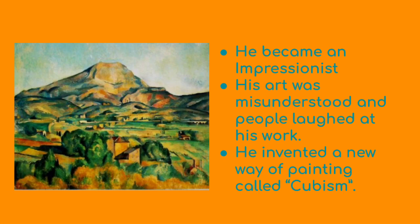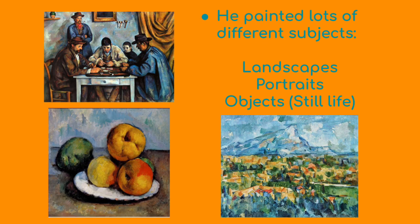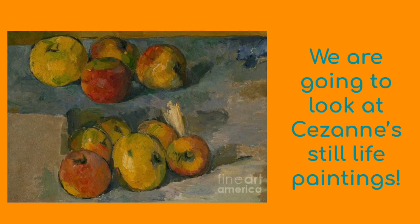Cezanne painted lots of different subjects: landscapes, portraits and objects. Although one of his favourite subjects was to paint a still life. We're going to be looking at some of Cezanne's still life paintings.